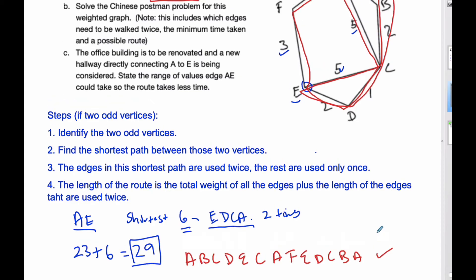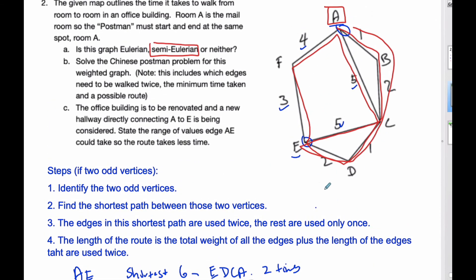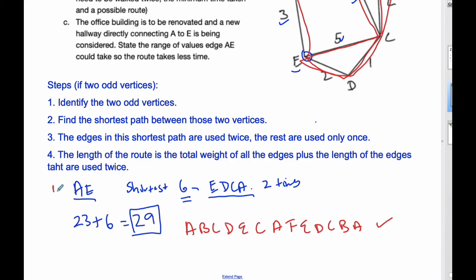This is just one of the possible paths you could take. There's lots of different combinations, you just need to know of one. And so that's part B finished. Now part C says the office building is to be renovated.